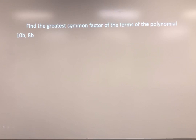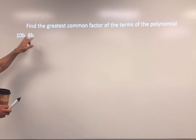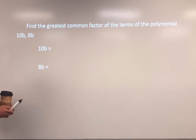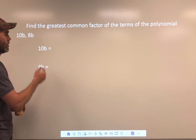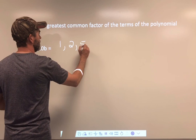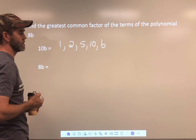So the first thing we're going to do is find the greatest common factor between 10B and 8B. To start, you want to take these two things and separate them. Think about the factors of 10: 1 times 10, 2 times 5. We list these from least to greatest: 1, 2, 5, 10, and there's a single B in there.